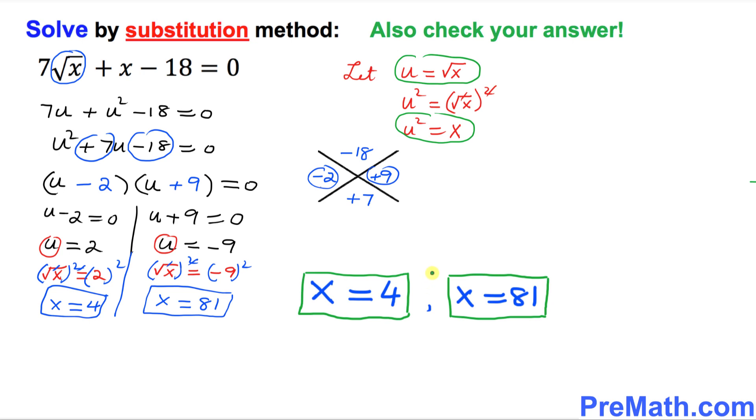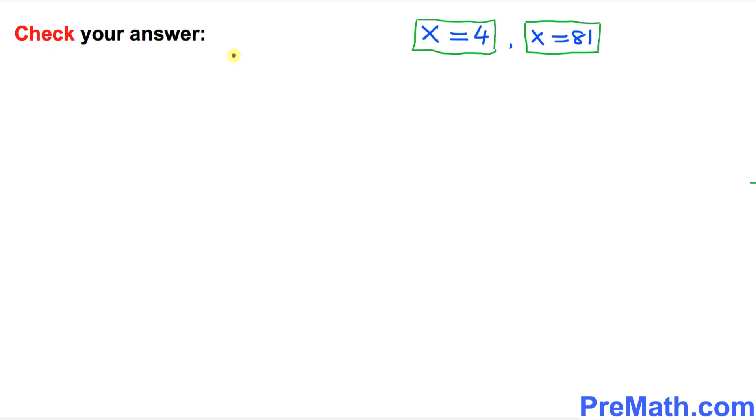But we need to check our answer in the next step. So now we want to check our answers. We know we have two solutions, x equal to 4 and x equal to 81. So let's try this first one, x equal to 4.